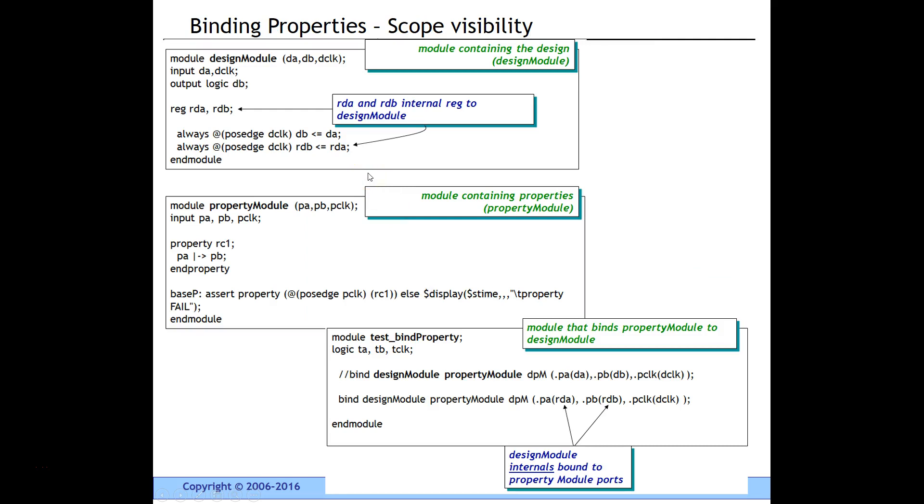Okay, so there's one more caveat here. Let's say here's my design module with the same ports as before, but I have internal registers. And I work on these internal registers as well as the input ports. But I basically want to write an assertion on the registers which are internal to the design module. They are not the ports. So how do I bind the internals of the design module with the property module? This is the same property module that we have seen in the last two slides.